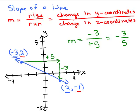So this idea — change in y coordinates over change in x coordinates — is really the same thing as rise over run, but we can actually use an algebraic formula for figuring out the slope of the line so that we don't have to always graph the two points and count. In general, it's probably easier to go ahead and use this next formula.